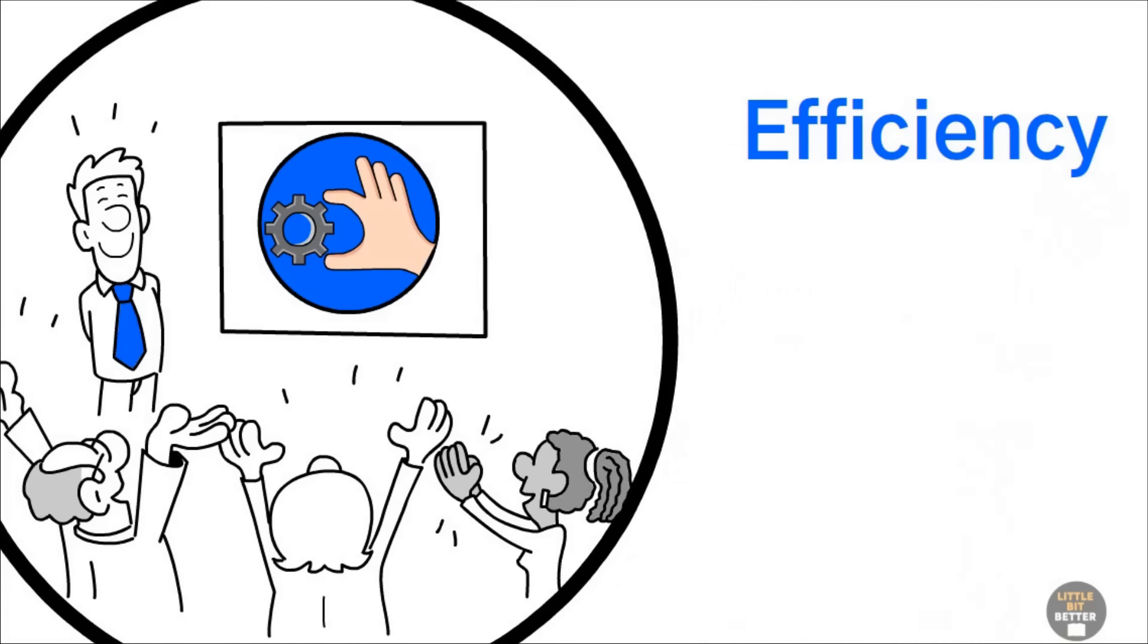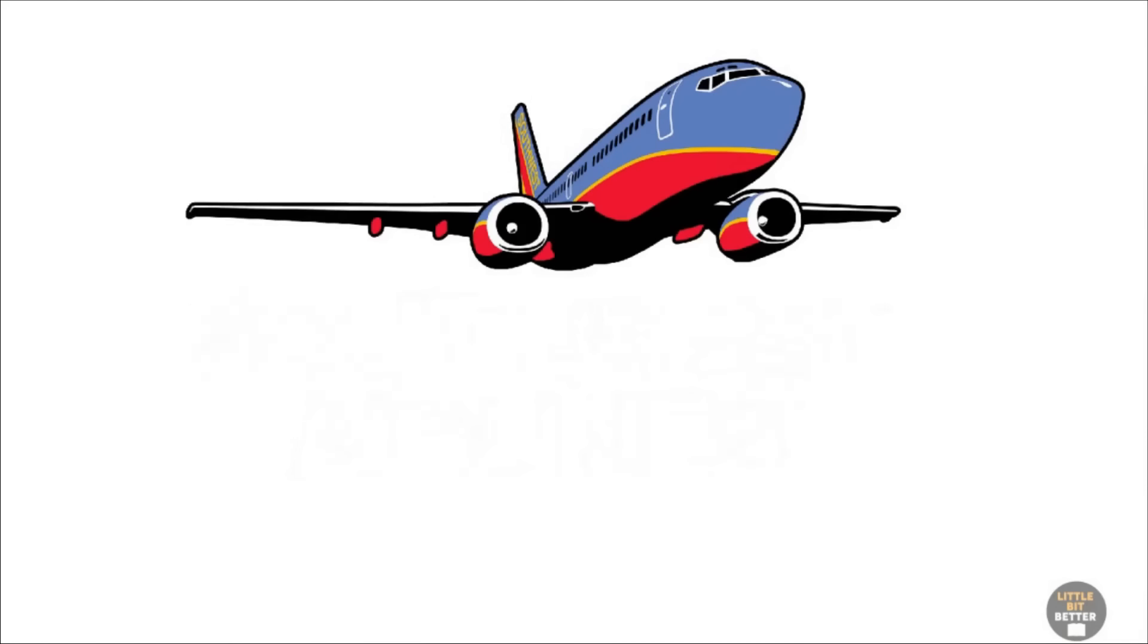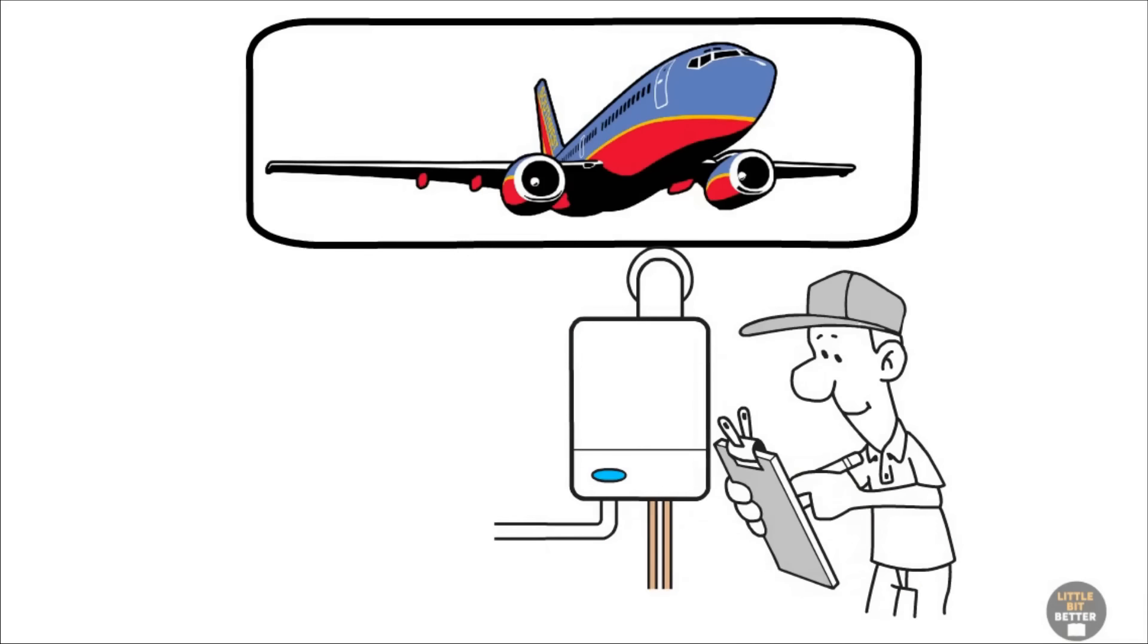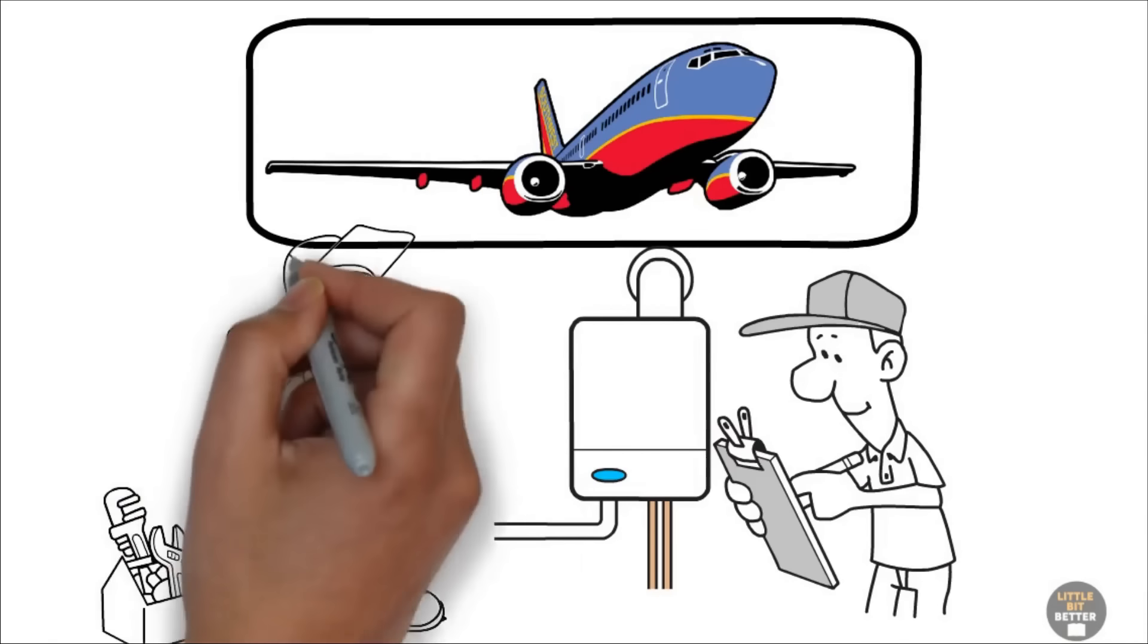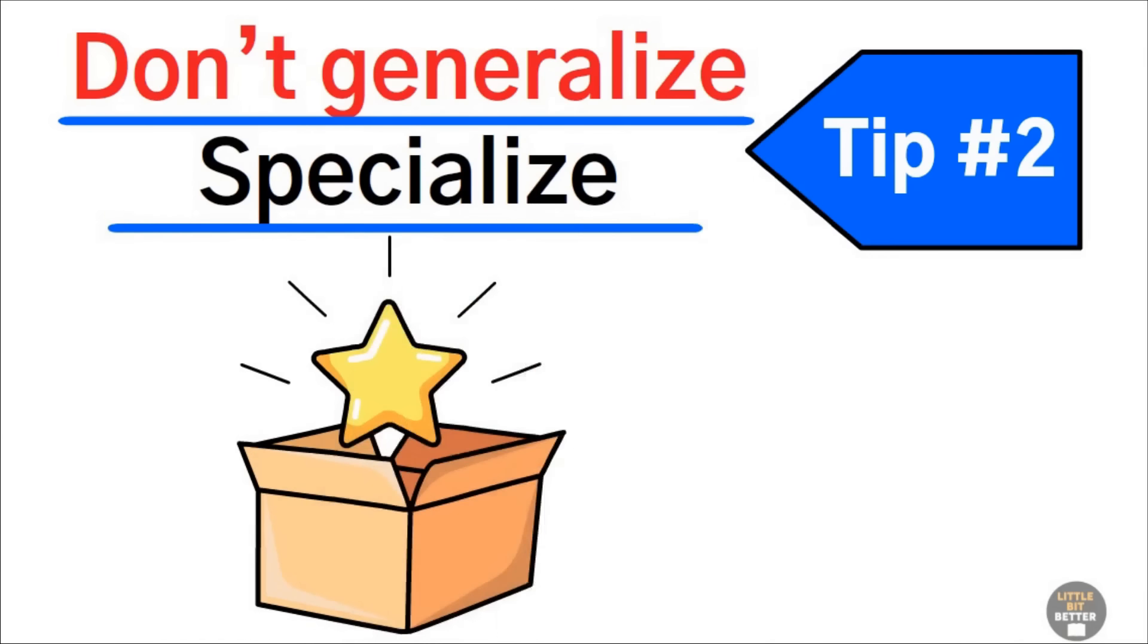Efficiency and improvement come when you are focused on one thing. For example, there's a reason Southwest Airlines only uses the Boeing 737 airplanes. This way, their crew can learn one piece of equipment and maintenance teams can quickly spot problems with one diagnostic routine. To recap tip number two, don't generalize. Specialize. Focus on selling one product or service.